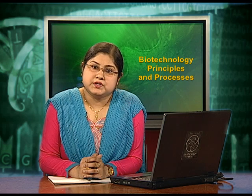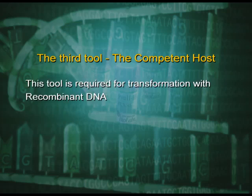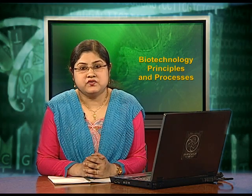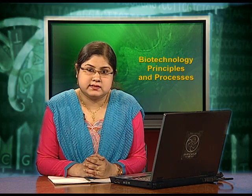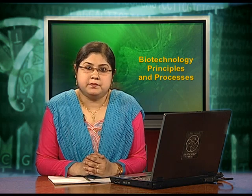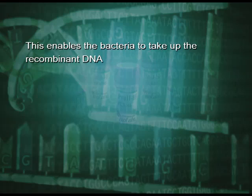The next required tool of recombinant DNA technology is the competent host, which is required for transformation with recombinant DNA. Since DNA is a hydrophilic molecule, it cannot pass through cell membranes. In order to force bacteria to take up the plasmid, the bacterial cells must first be made competent to take up DNA. This is done by treating them with a specific concentration of a divalent cation such as calcium, which increases the efficiency with which DNA enters the bacterium through pores in its cell wall. Recombinant DNA can then be forced into such cells by incubating them with recombinant DNA on ice, followed by placing them briefly at 42°C to give a heat shock, and then putting them back on ice. This enables the bacteria to take up the recombinant DNA.